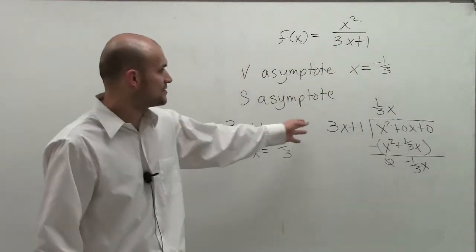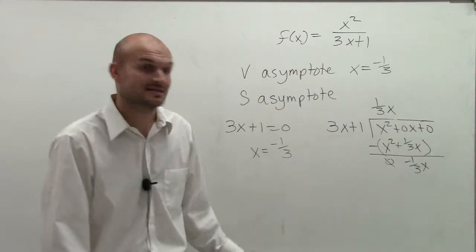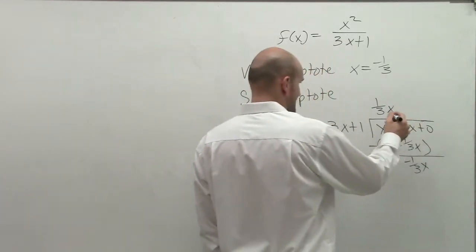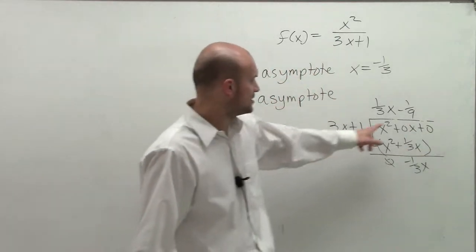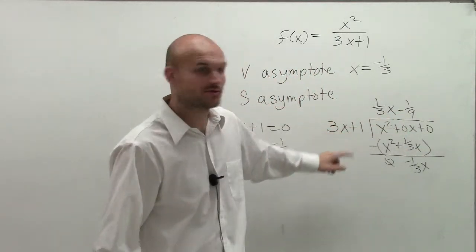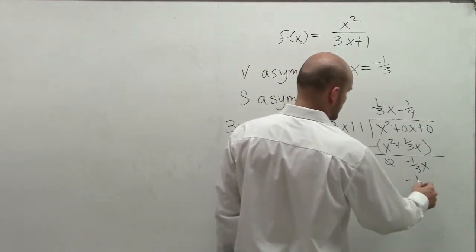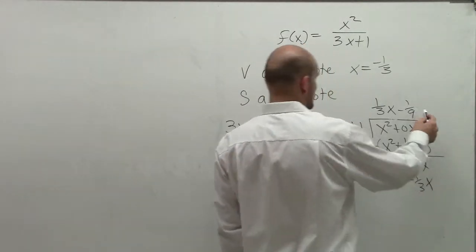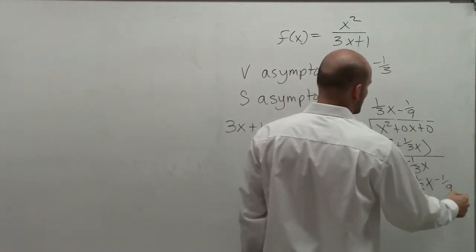Now, does 3x divide into negative 1/3 x? Yes, it does. It divides in there negative 1/9. Then I multiply negative 1/9 times 3x, and I get negative 1/3 x. Negative 1/9 times 1 is negative 1/9.